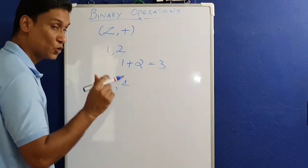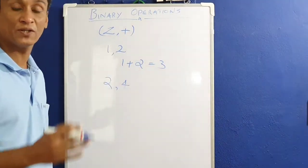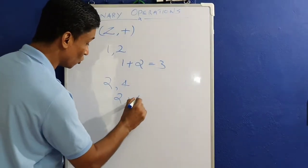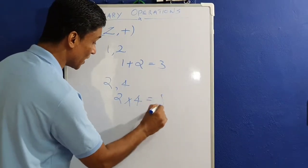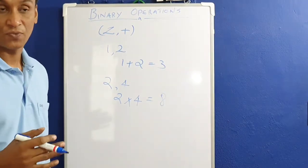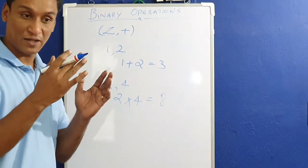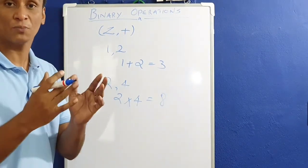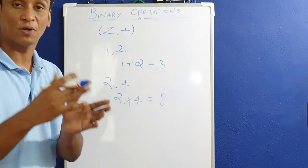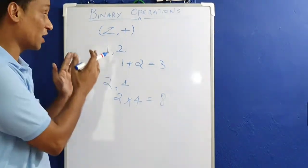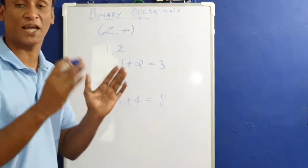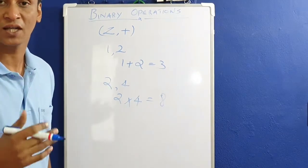Take 2 and 4 — both are integers. 2 into 4 equals 8, and 8 is another integer. If you multiply any two integers, you get another integer.